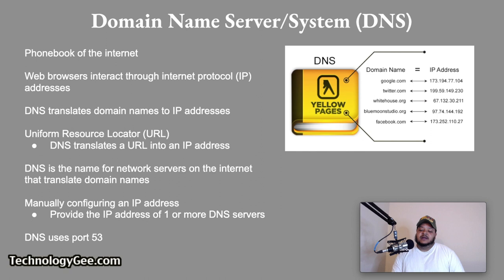The DNS is the name for the network of servers on the Internet that translates domain names such as Google dot com and individual host names into their matching IP addresses. If you manually configure an IP address, you typically provide the IP addresses of one or more DNS servers as part of the configuration process. DNS uses port 53.